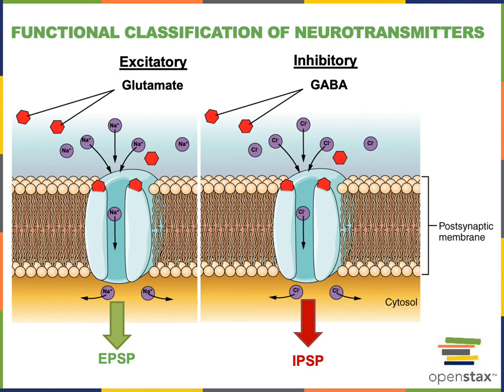While glutamate is an example of an excitatory neurotransmitter and GABA is an example of an inhibitory neurotransmitter in the central nervous system, some neurotransmitters can function as excitatory in one context and inhibitory in a different context. For example, acetylcholine has excitatory functions such as stimulating skeletal muscle contraction, and inhibitory functions such as inhibiting cardiac muscle and decreasing heart rate.